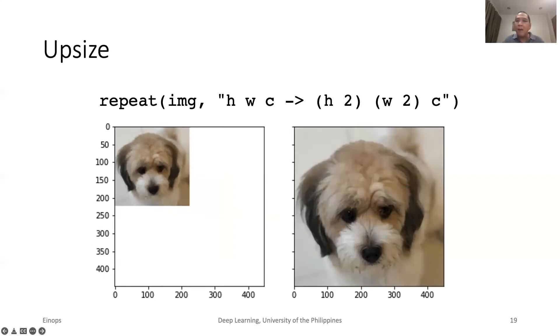In numpy, upsampling is done by repeat. In EinOps, we also use repeat. In this example, we double the height and width of the image.